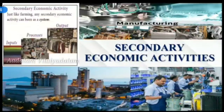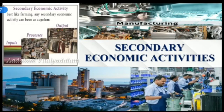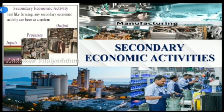Next, we will see secondary economic activities. Just like farming, any secondary activity can be seen as a system of inputs, process, and output. Hence, secondary activities are those that change raw materials into usable products through processing and manufacturing. Bakeries that make flour into bread, and factories that change metal and plastics into vehicles, are examples of secondary economic activities.